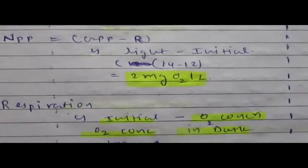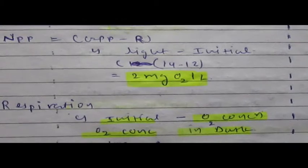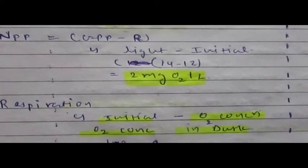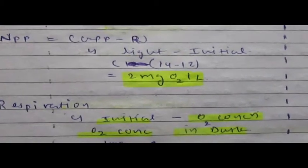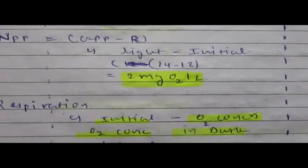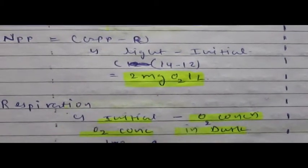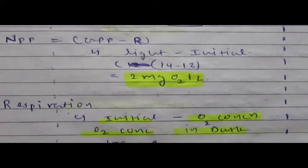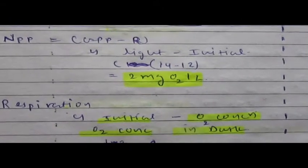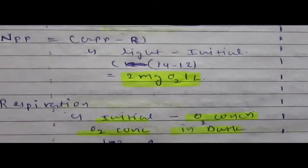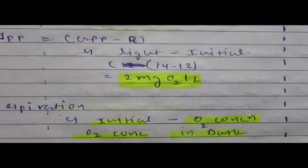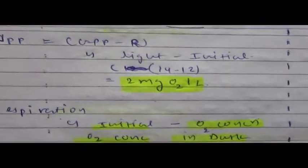To measure NPP, we take the oxygen concentration in the light bottle minus the oxygen concentration at the initial period: 14 − 12 = 2 milligrams per liter. That gives us the NPP measurement.